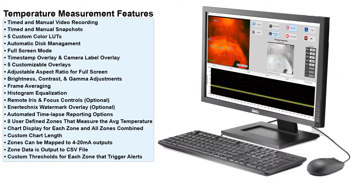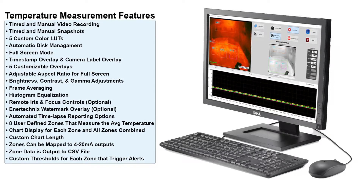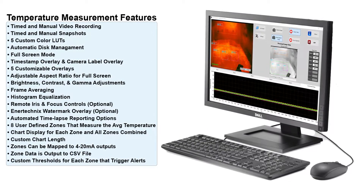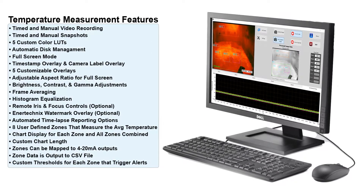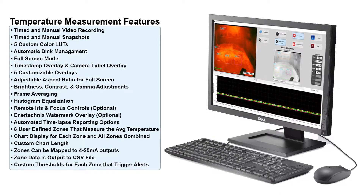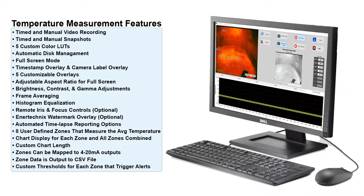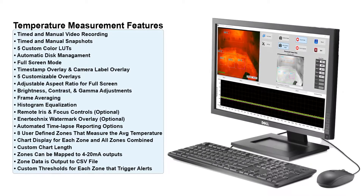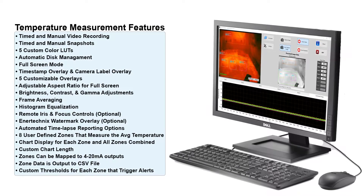Some of the features found inside the software are timed manual video recording, timed manual snapshots, five custom color lookup tables, automatic disk management, full screen mode, timestamp overlay and camera label overlay, five customizable overlays, adjustable aspect ratio for full screen mode, brightness, contrast, and gamma adjustments, frame averaging, histogram equalization, remote iris and focus controls if you have the optional hardware, an optional EnerTechnics watermark overlay, automated time-lapse reporting options, eight user-defined zones that measure the average temperature, chart display for each zone and all zones combined, custom chart length, zones can be mapped to 4 to 20 milliamp outputs, zone data is also output to a CSV file, and we have custom thresholds for each zone that triggers an alert.